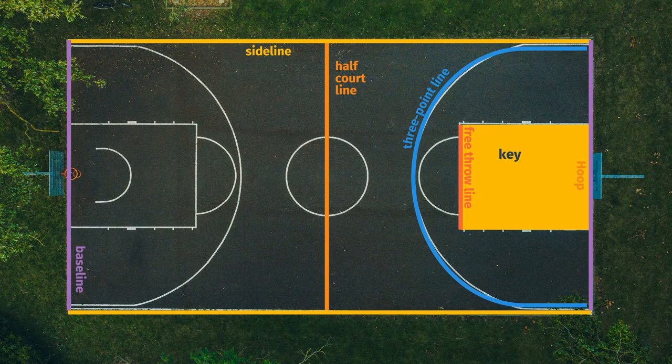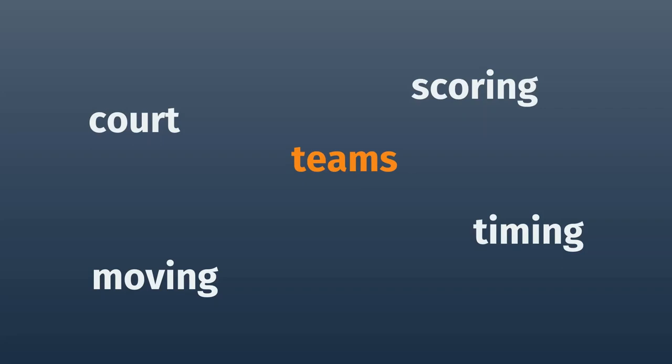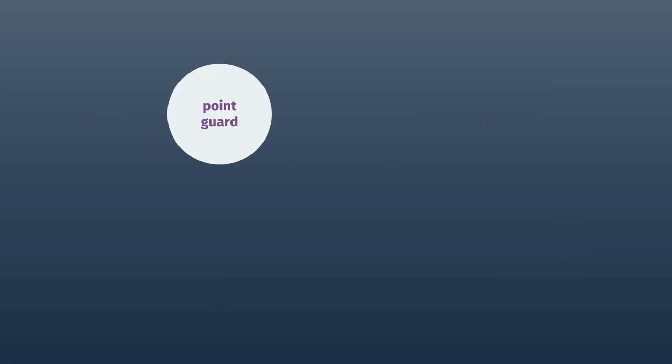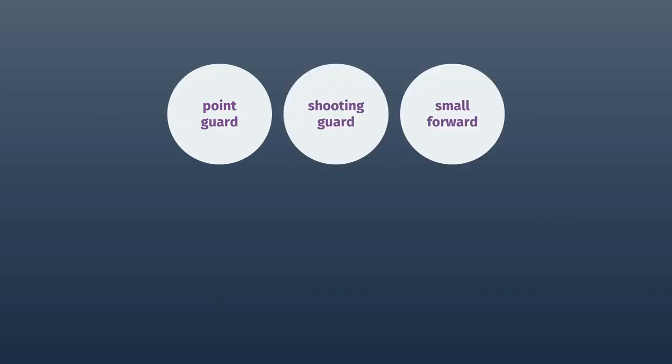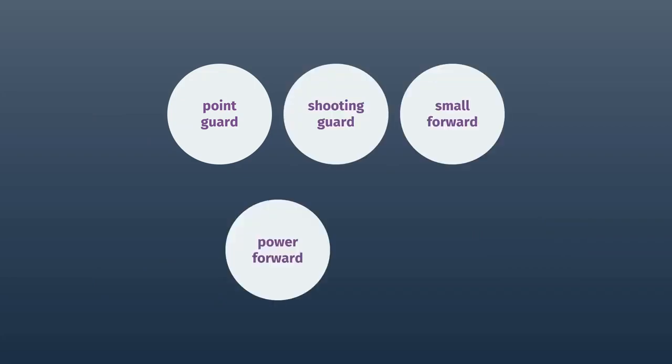This is a sideline and these are baselines. In basketball, if you step on the sideline or the baseline while holding the ball, you are considered out of bounds. In a basketball game there are two teams — each team has five players, and generally a team will be comprised of a point guard, shooting guard, small forward, power forward, and center.